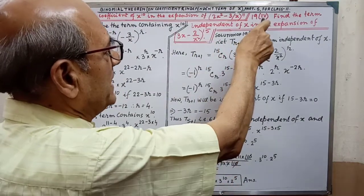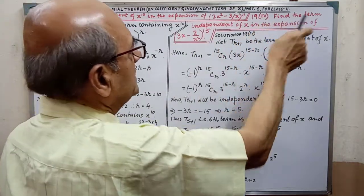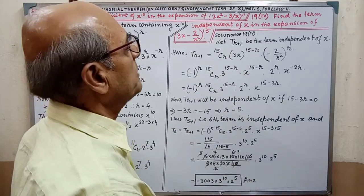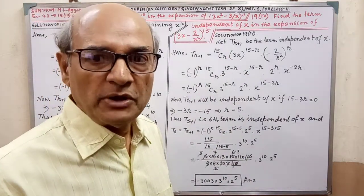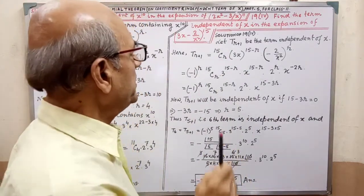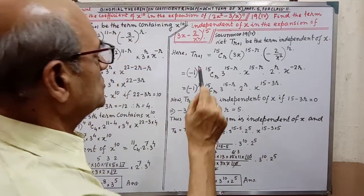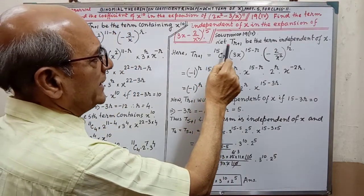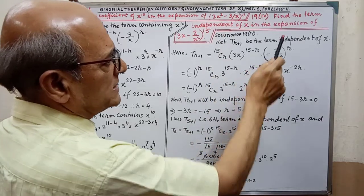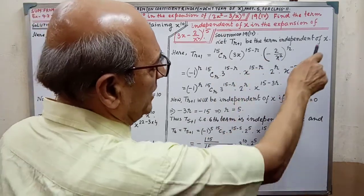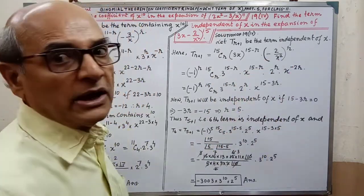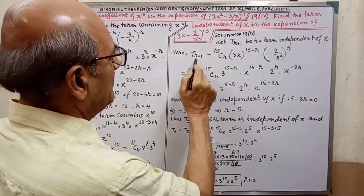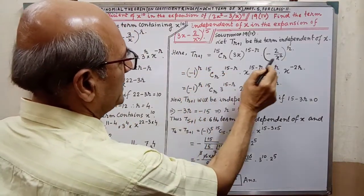Next, that is sum number 19, part 4 — find the term independent of x in the expansion. This type of sum you may expect in the exam, so you must pay your full attention to understand. Solution: Let T(R+1) be the term independent of x. Here, same formula — by applying the formula we are getting this.